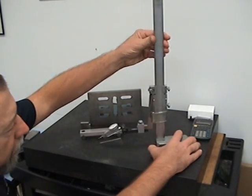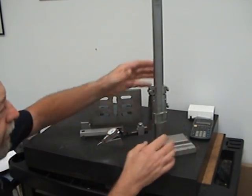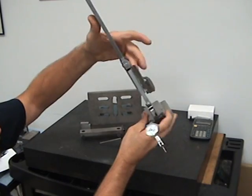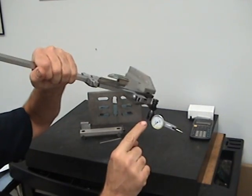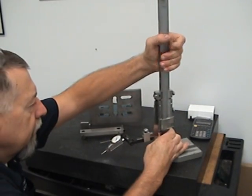We're going to use the height gauge, but the height gauge is mainly used in this as something just to hold our indicator. You can see that the height gauge does nothing. We're not going to read it. We're just going to use it to hold the indicator in place so that we can check the angle of our part.